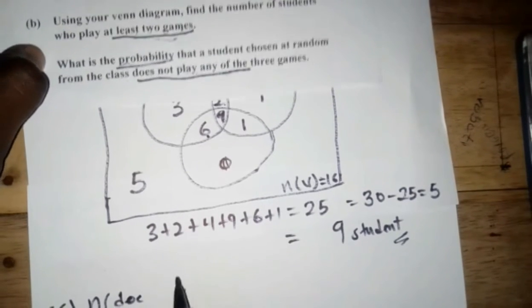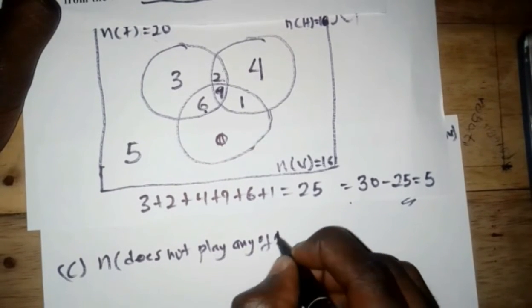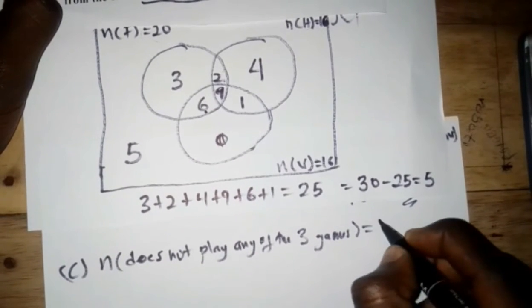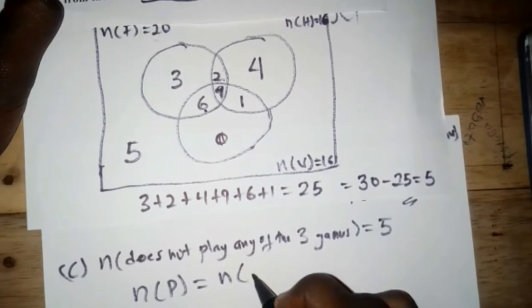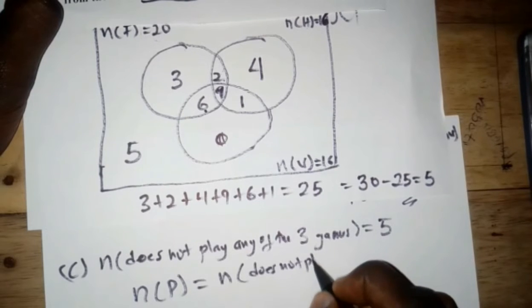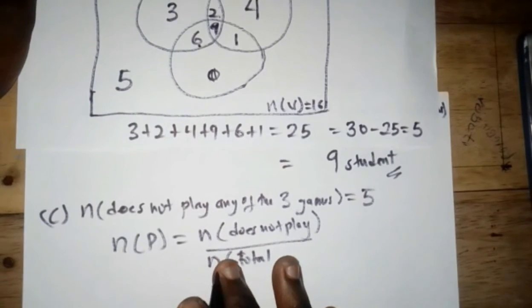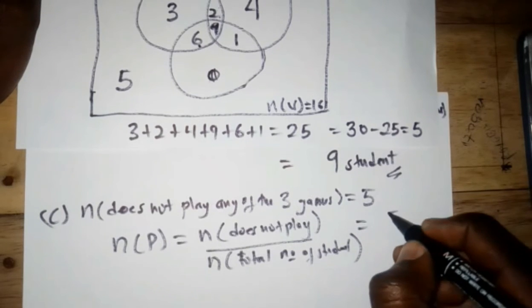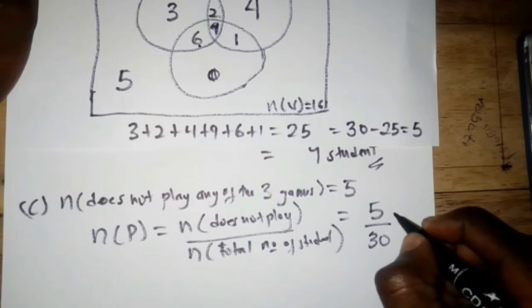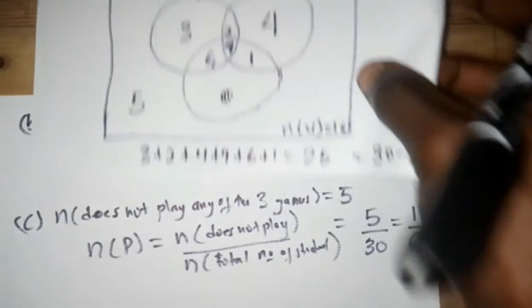The probability that a student chosen at random does not play any of the three games is: number who play no game divided by total students = 5/30 = 1/6. So the probability is 1/6.